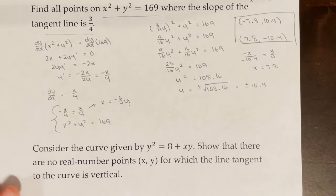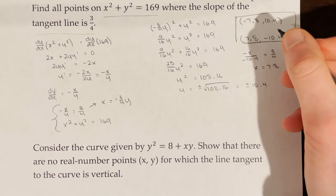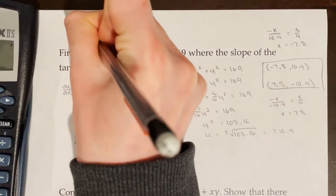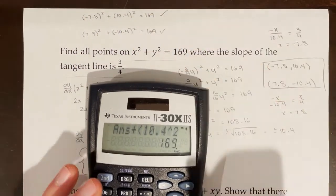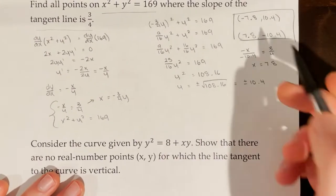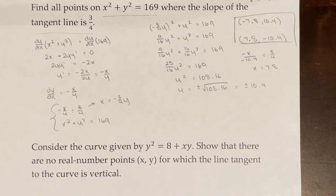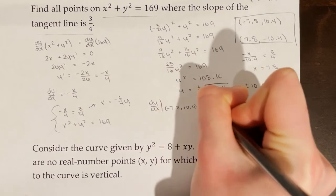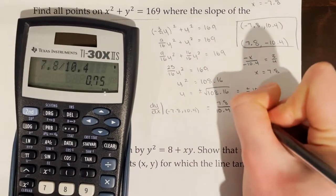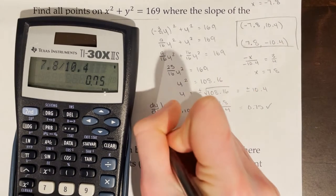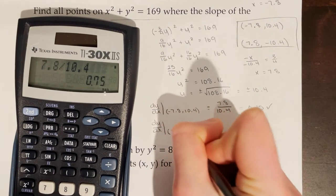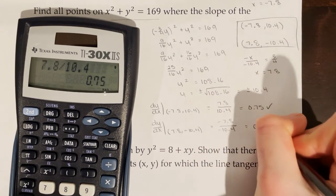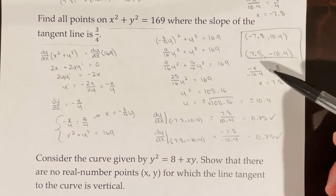I'll verify that both points lie on the curve and both produce a tangent line of slope 3/4. Both points satisfy the original equation. Evaluating dy/dx at (-7.8, 10.4) gives 0.75, and at (7.8, -10.4) gives -7.8 over -10.4, which is also 0.75. Both confirmed.